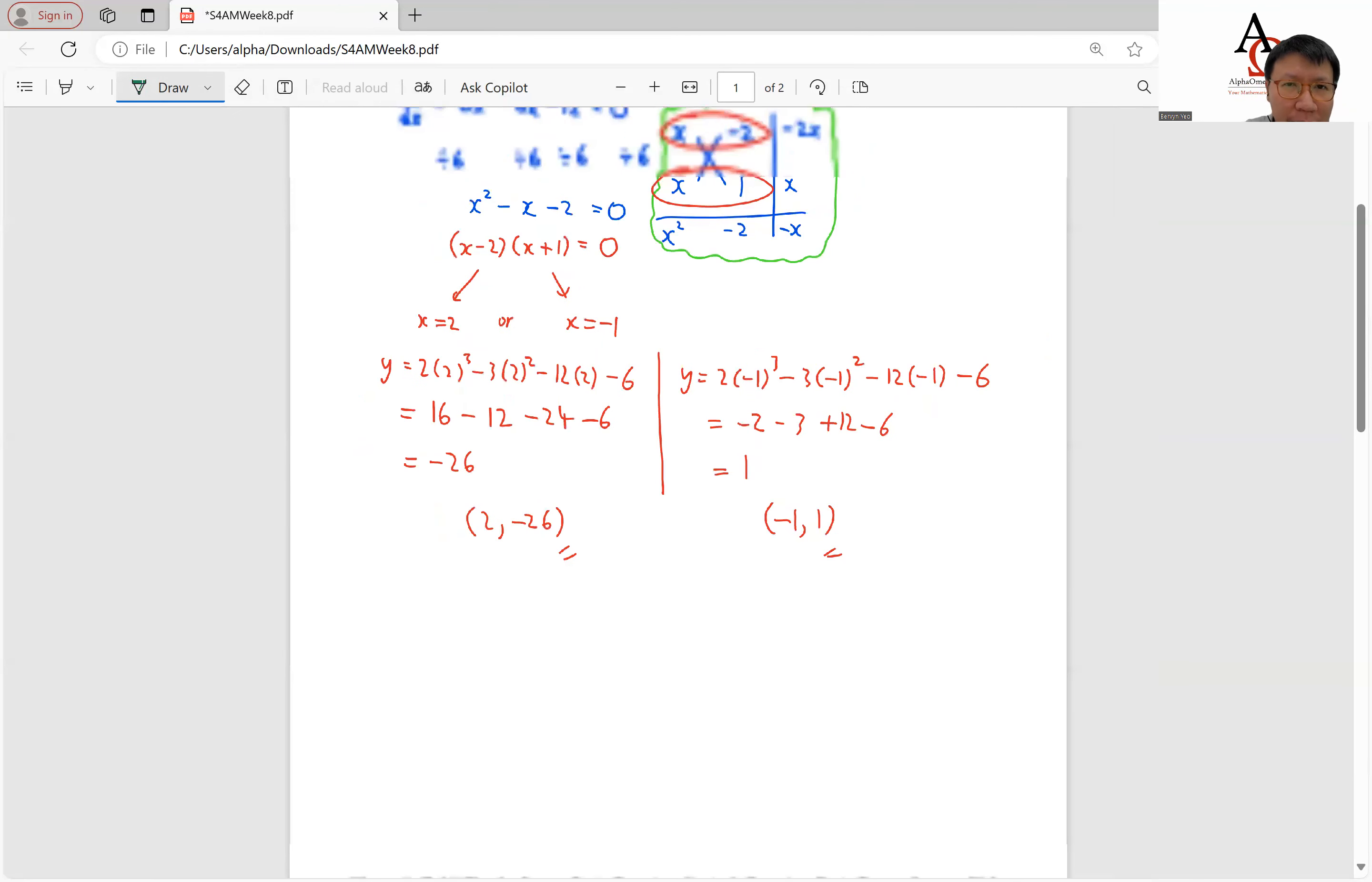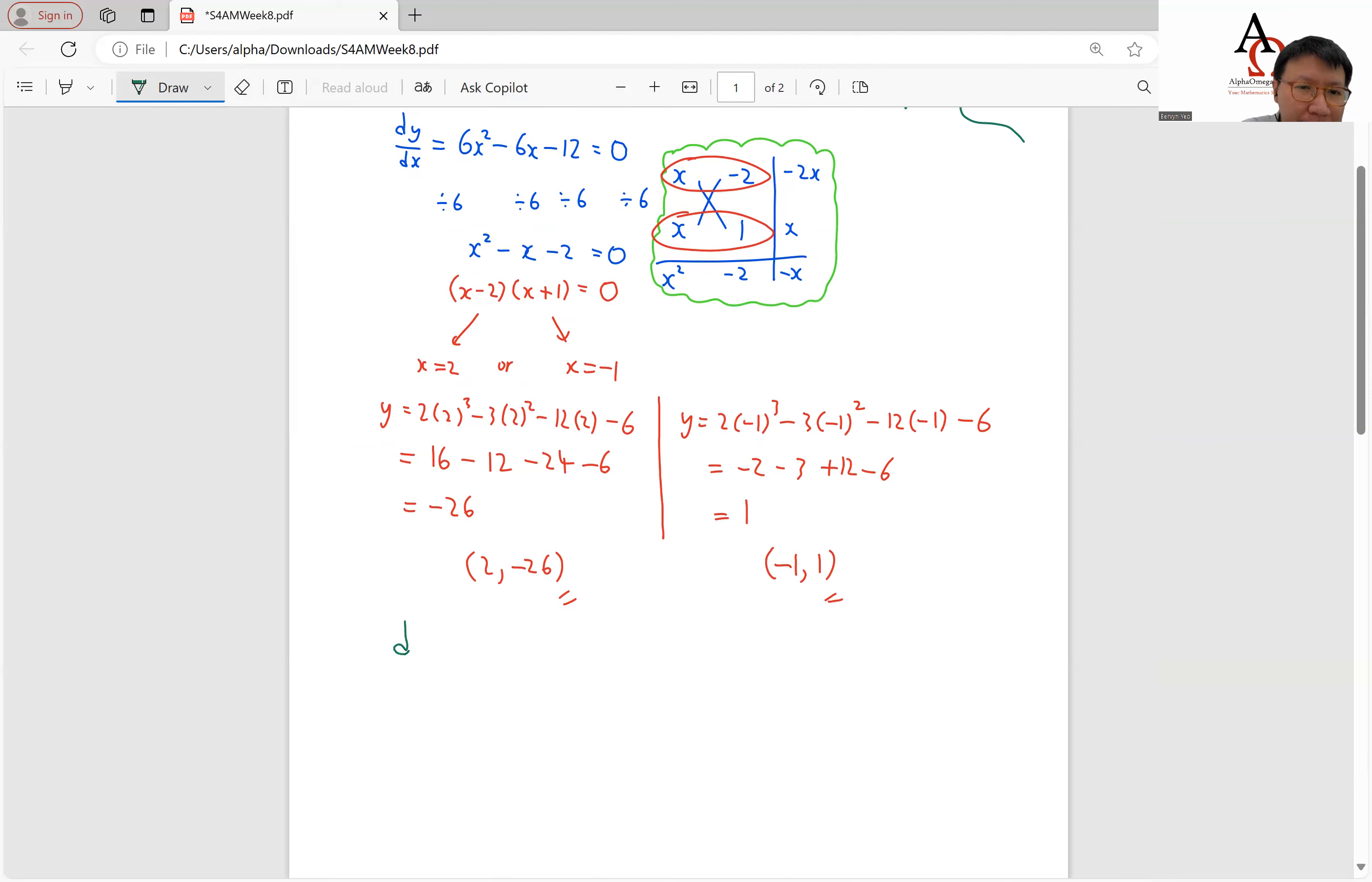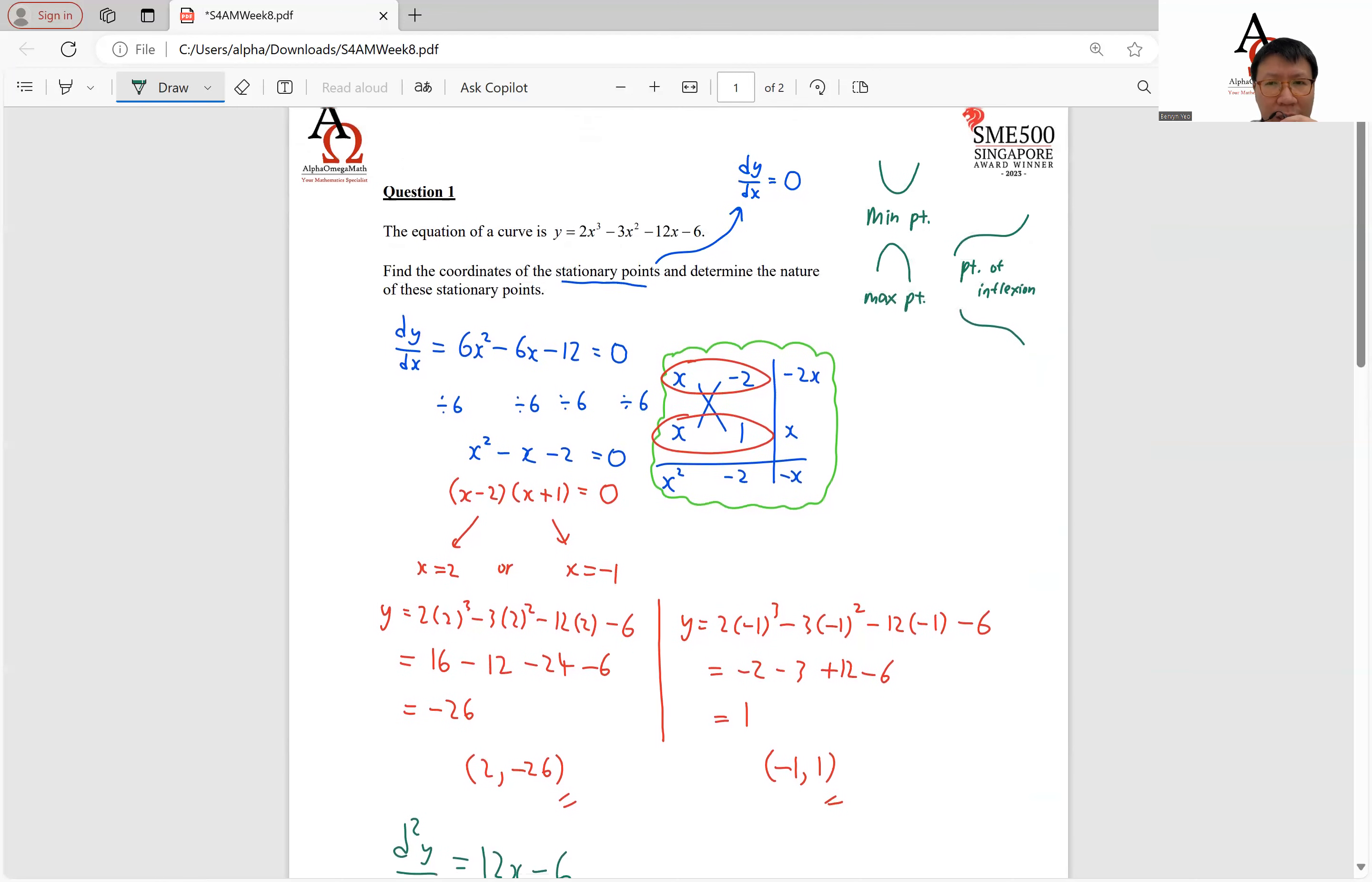We have d squared y over dx squared equals to 12x minus 6. So this will be our second derivative, which we will use to find and see whether our stationary point is any of those that we spoke about just now.